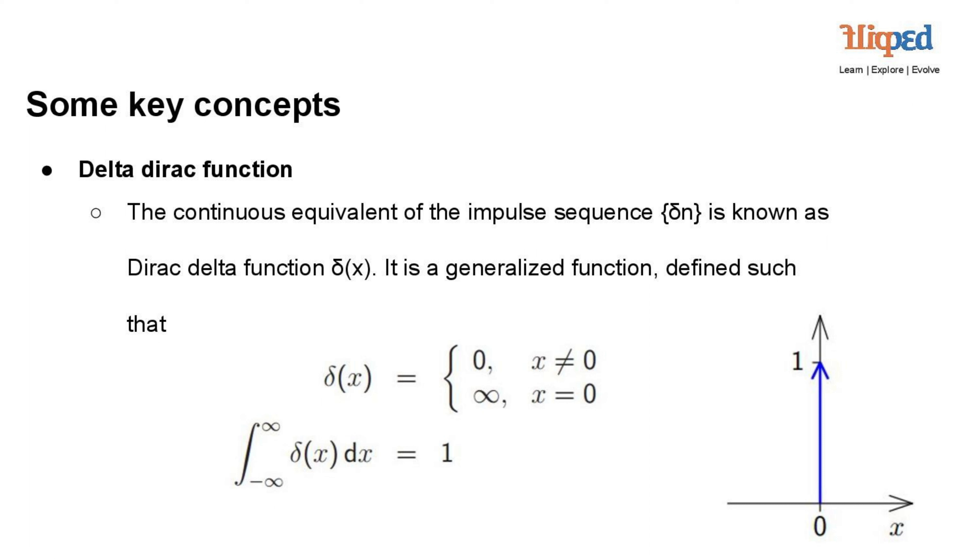The Dirac delta function is defined in such a way that it has the following properties: First, delta x equals zero for all x not equal to zero. The Dirac delta function is zero at all points except x equals zero.